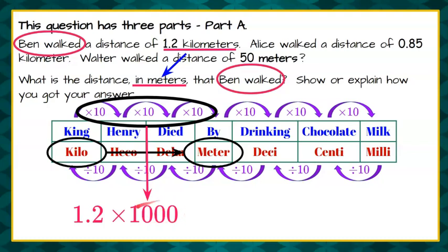So we need to take 1.2 kilometers and multiply it by 1,000 to give us the number of meters. When we multiply by a factor of 10, this is 1,000, we have three zeros, we're going to move this decimal point three spaces to the right. So one space here to the right of the two, and then I need to add two zeros, which will give me 1,200 meters. So Ben walked 1.2 kilometers, which is equivalent to 1,200 meters for part A.